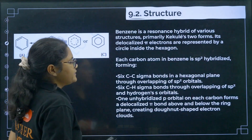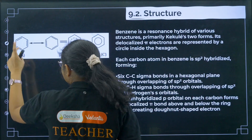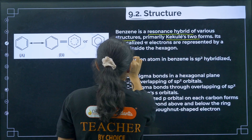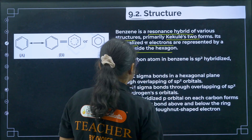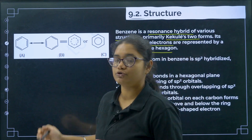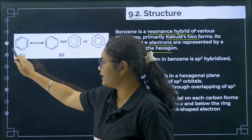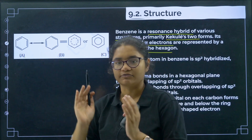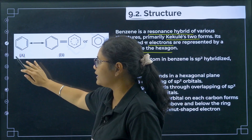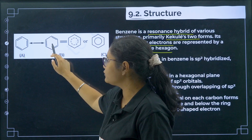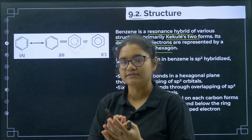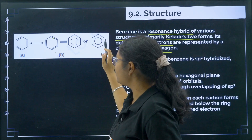The structure of benzene is very important. Benzene is a resonance hybrid of two Kekulé structures — its delocalized pi electrons are represented by a circle inside a hexagon. Because of the conjugated system — alternating single and double bonds — both Kekulé structures A and B are resonating structures. To show that electron density is distributed throughout the ring rather than localized, we represent benzene with a circle inside the hexagonal ring.